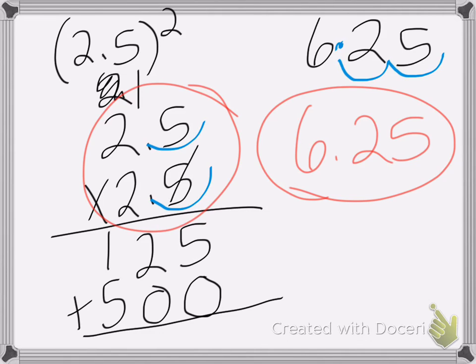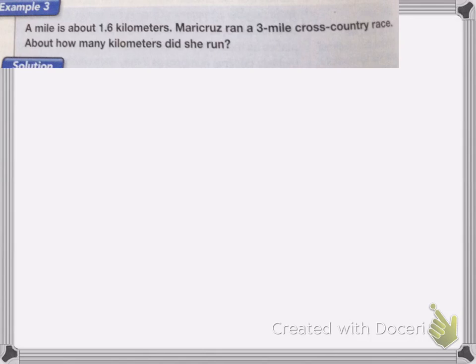Okay, last one. A mile is about 1.6 kilometers. Marcruz ran a 3 mile cross-country race. About how many kilometers did she run? So we have 1.6 kilometers is 1 mile, and I have 3 miles. So I'm going to multiply 1.6 by 3.